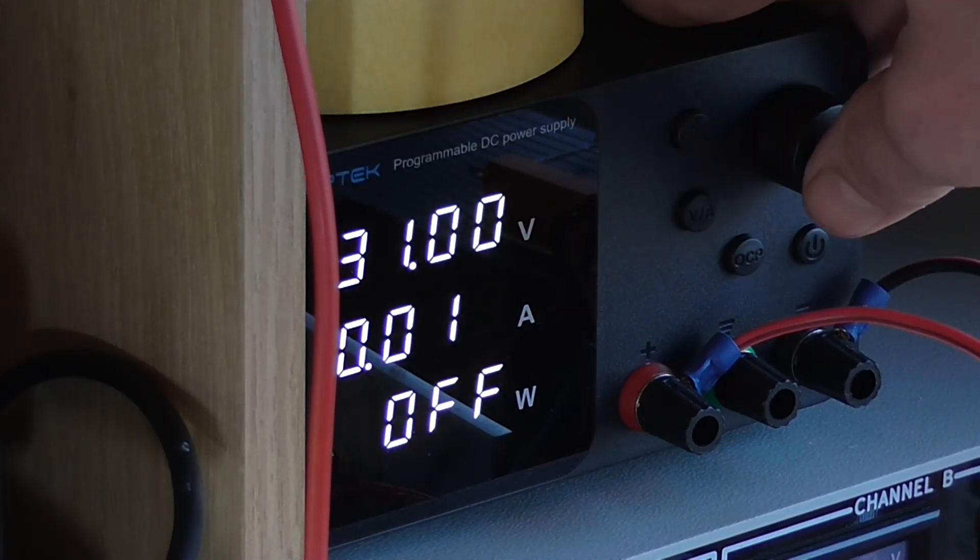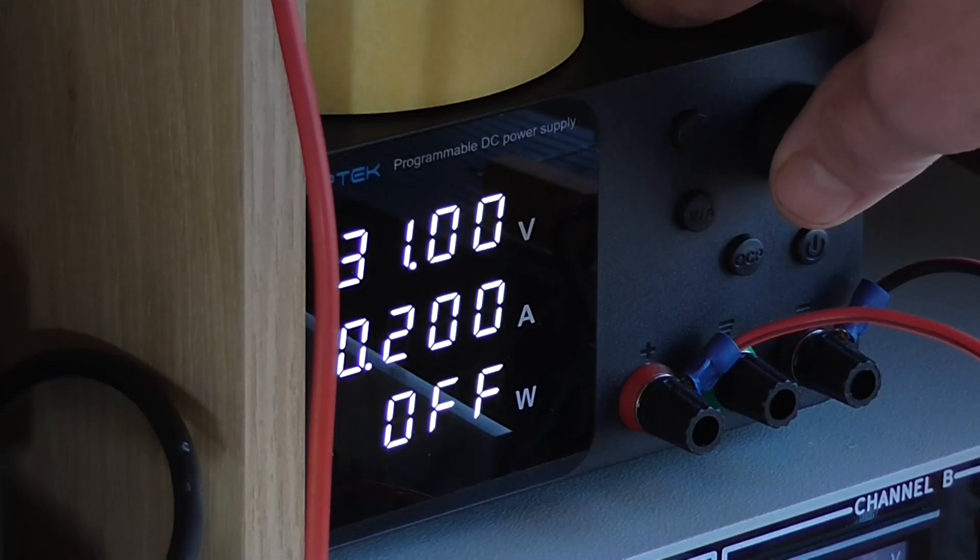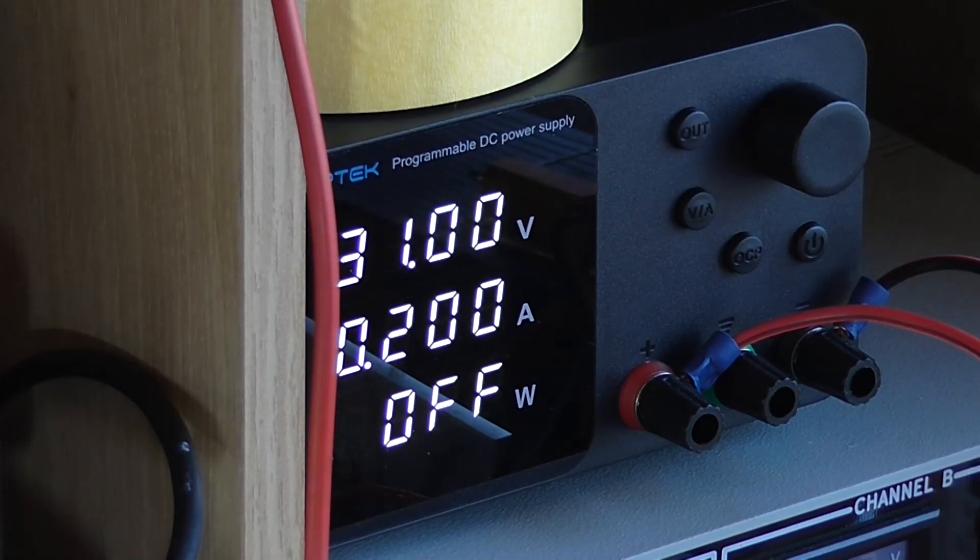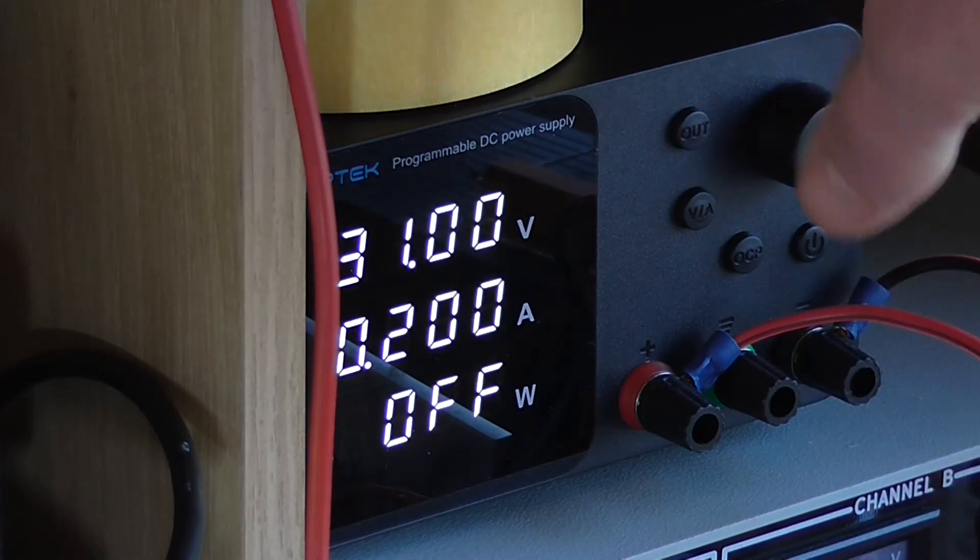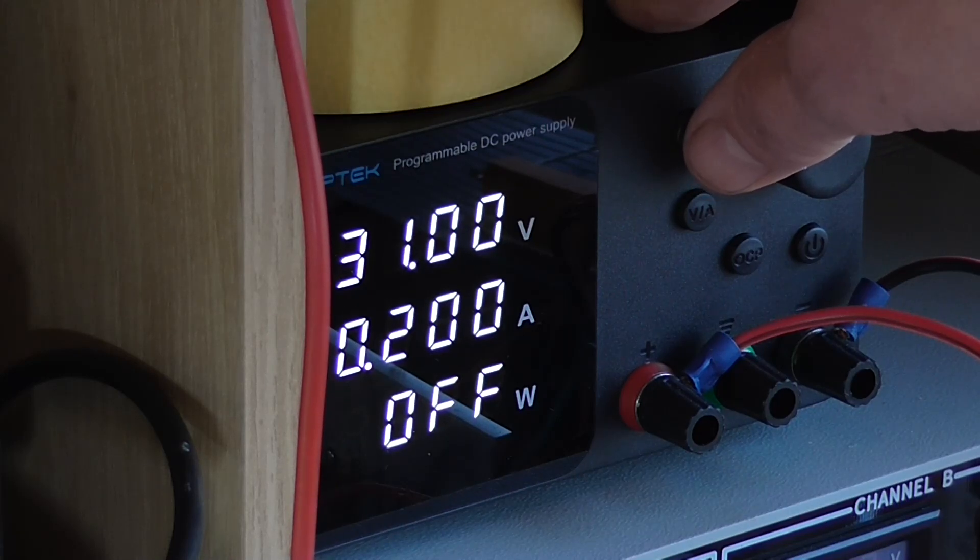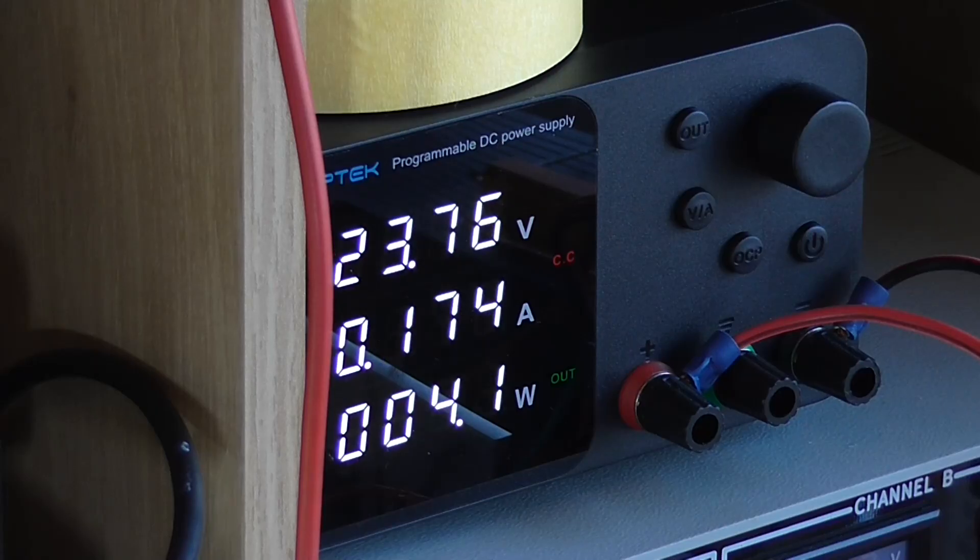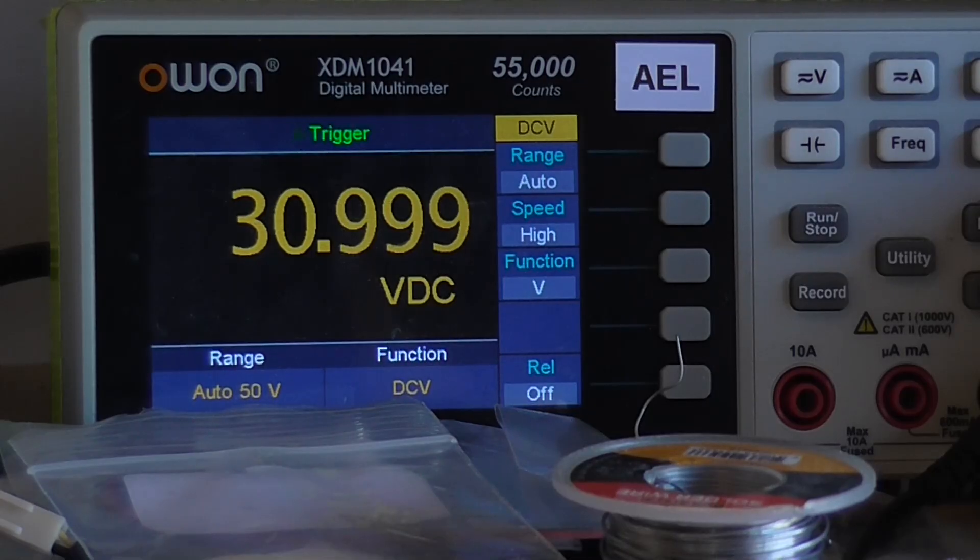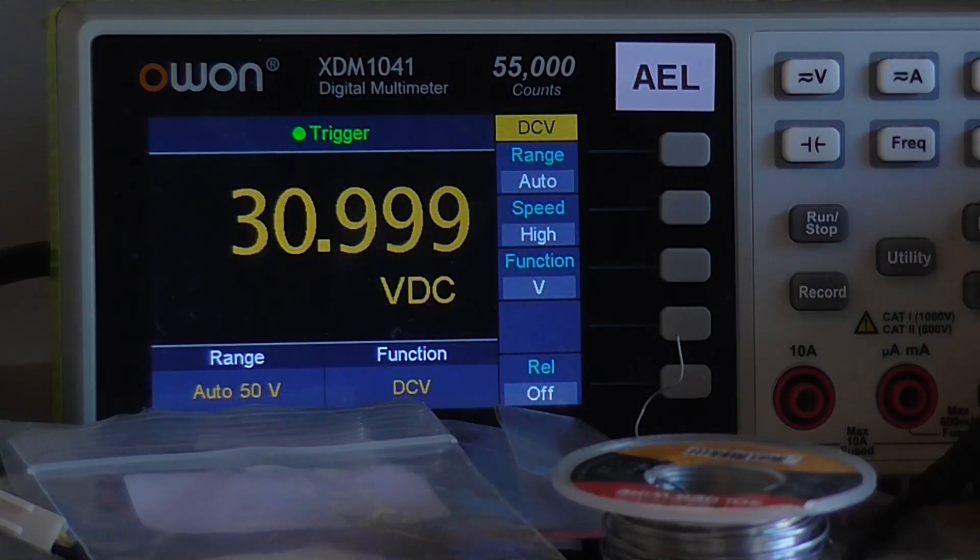I'm going to change my current limit to, I'm going to go 200 milliamps. So this is going to be a quick charge to the capacitor and there should be no problems here. I'm quite safe in assuming that the capacitor is not shorted. And as we can see, it jumps up immediately. So there is nothing really wrong with that capacitor at the moment. So I'm going to discharge it.